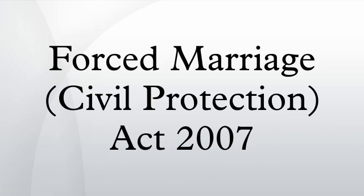The centrepiece of the Act is the Forced Marriage Protection Order. A person threatened with forced marriage can apply to court for a forced marriage order, which can contain whatever provisions the court finds would be appropriate to prevent the forced marriage from taking place, or to protect a victim of forced marriage from its effects, and may include such measures as confiscation of passport or restrictions on contact with the victim.